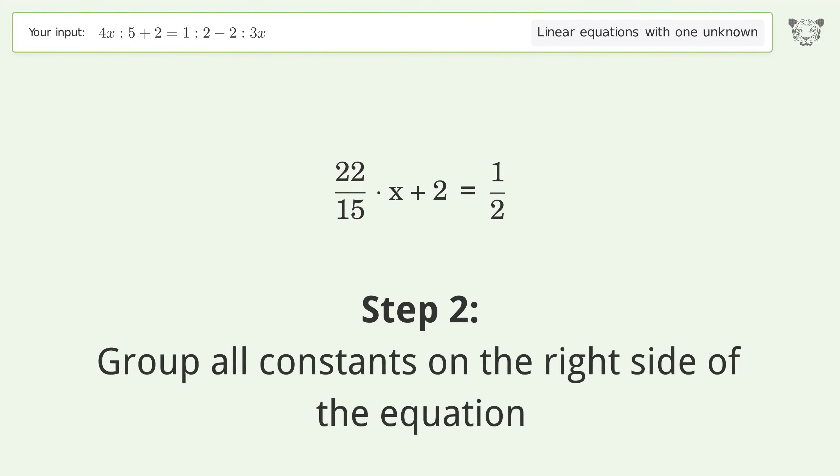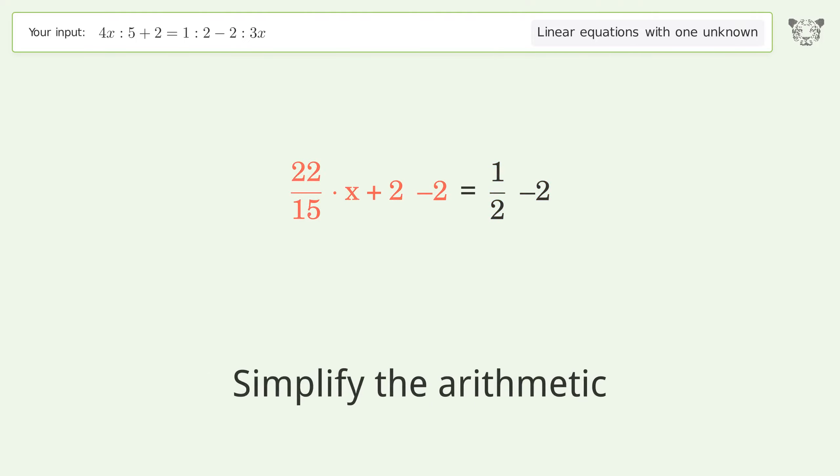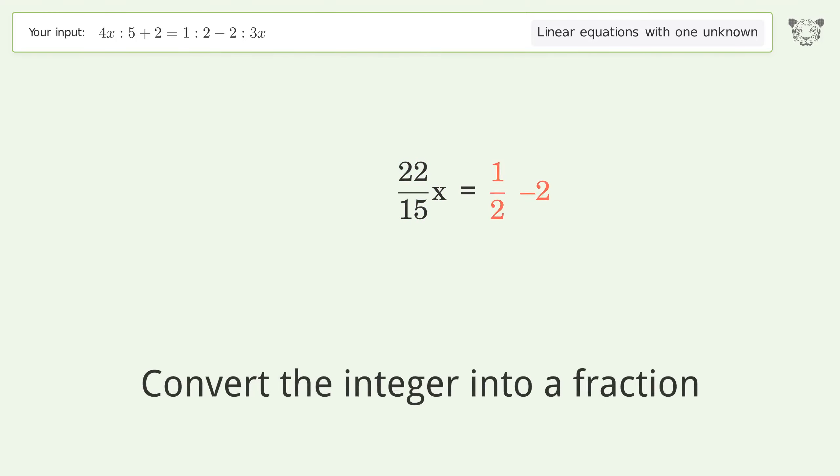Group all constants on the right side of the equation. Subtract 2 from both sides. Simplify the arithmetic. Convert the integer into a fraction.